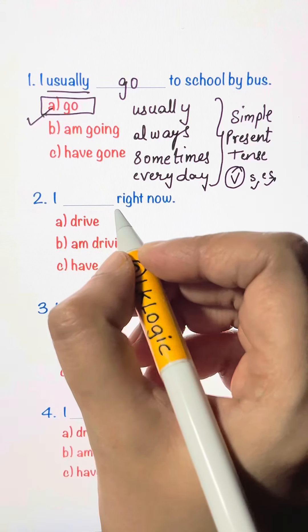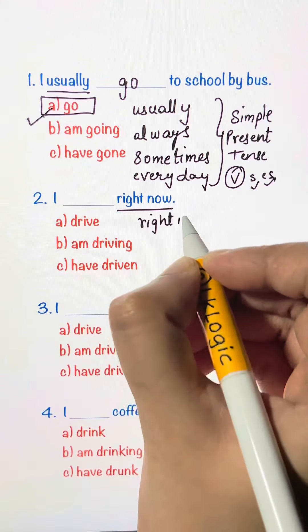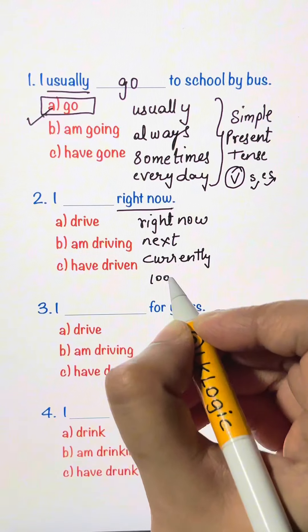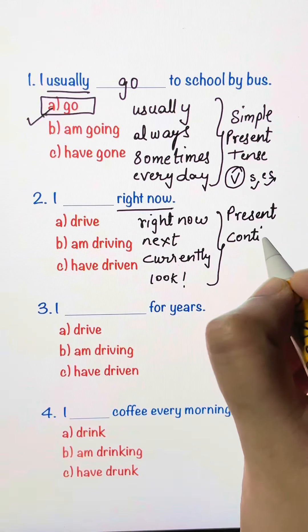I blank right now. So the keyword here is right now. Whenever you have words like right now, next, currently, look, we use present continuous tense.